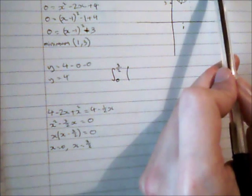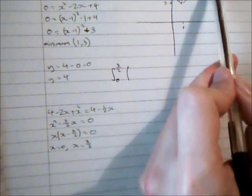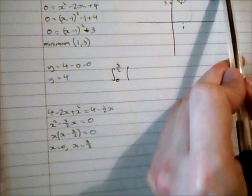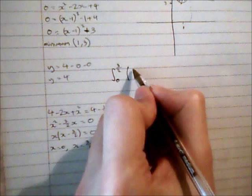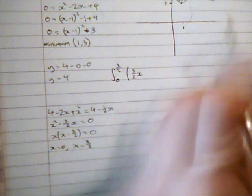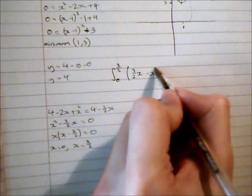So looking at the number parts, 4 subtract 4 is nothing. Looking at the x term then negative a half x subtract negative 2x gives me positive 3 over 2x. And then no x squared subtracting x squared gives me negative x squared.